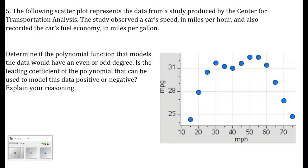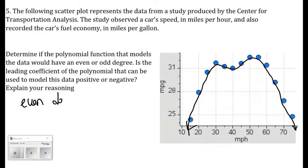Number five: a scatter plot from the Center for Transportation Analysis shows a car's speed in miles per hour versus fuel economy in miles per gallon. A function drawn through the data goes to negative infinity on both ends. Since both ends go the same direction — both negative — this is an even degree polynomial. Odd degree polynomials go in opposite directions.